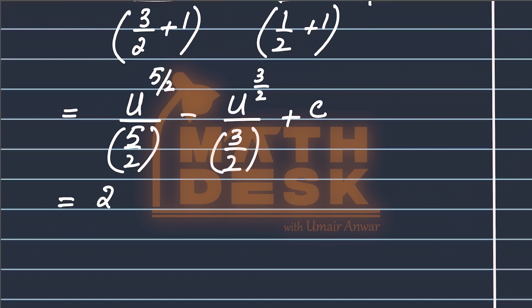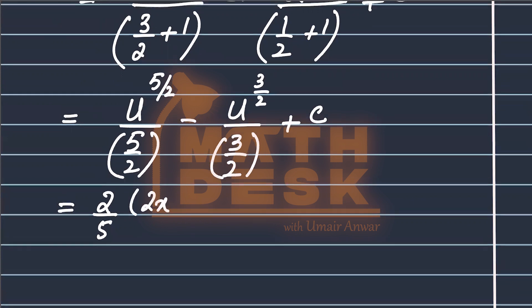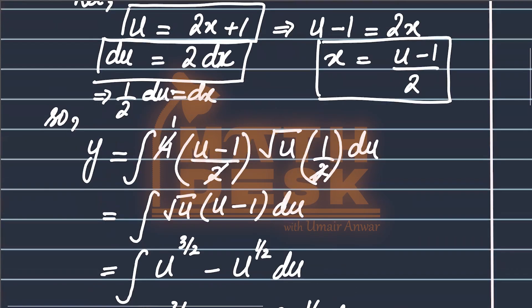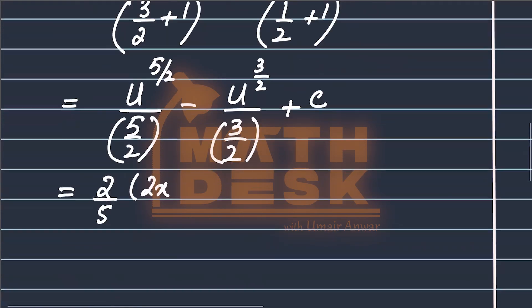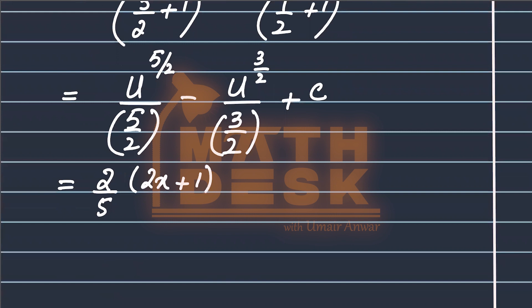अब इसके बाद हम इसको 2 times 2 upon 5 कर देंगे और u की जगा, जो हमने substitute किया था, उसको वापिस replace कर देते हैं. u was equal to 2x plus 1 और whole power में 5 upon 2 आ जाएगा minus 2 upon 3 times u u का मतलब हो गया 2x plus 1 और power में 3 upon 2 plus constant of integration.